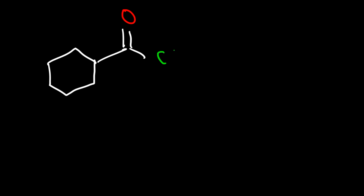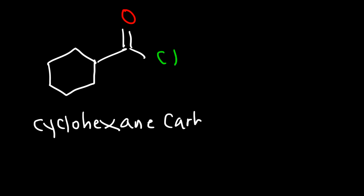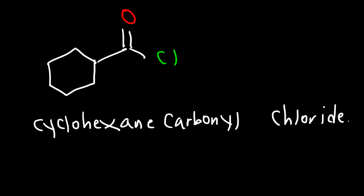Now what if we have a cyclohexane ring attached to an acid chloride? That is going to be called cyclohexane carbonyl — we have a carbonyl group right here — chloride: cyclohexane carbonyl chloride. Based on that example, go ahead and write the name for this one.